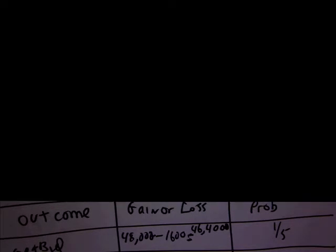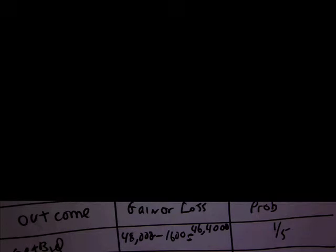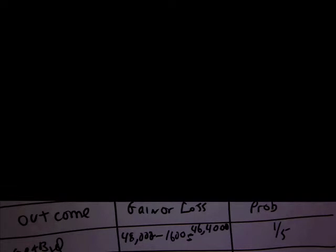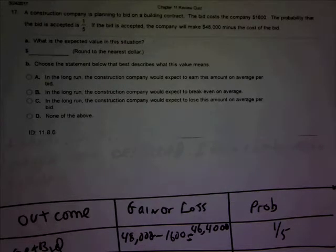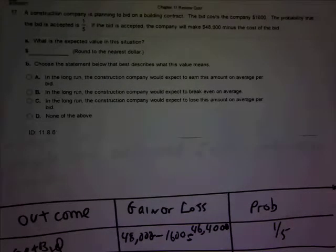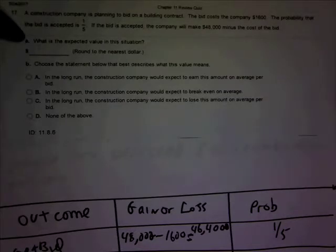Construction problem number 17. A construction company is planning to bid on a building contract. The bid costs the company $1,600. The probability that the bid is accepted is 1 over 5. If the bid is accepted, the company will make $48,000 minus the cost of the bid. What is the expected value of this situation?